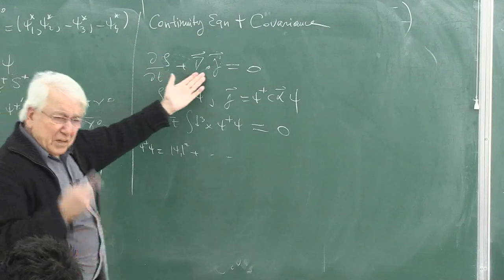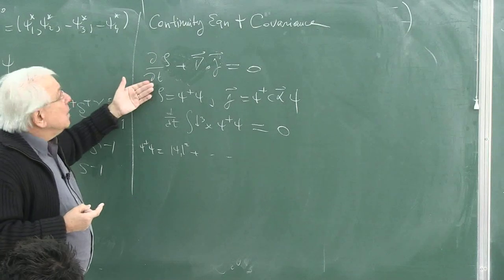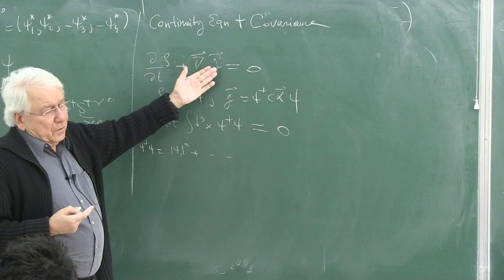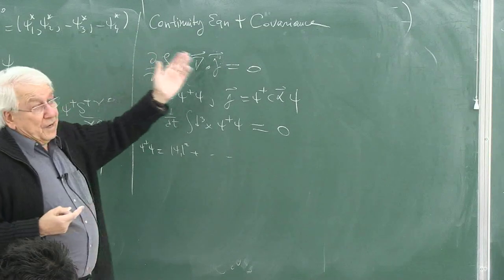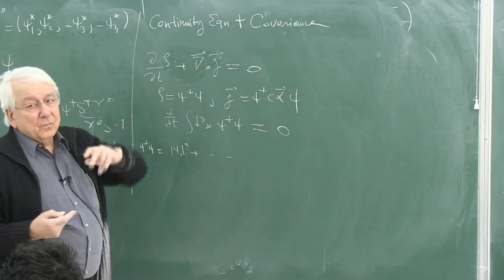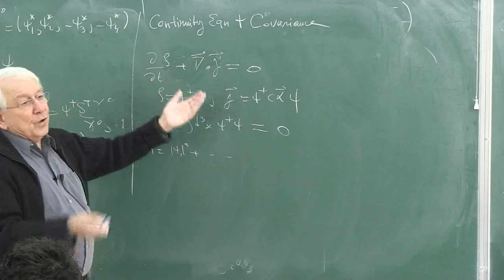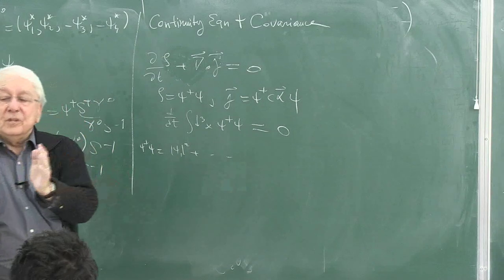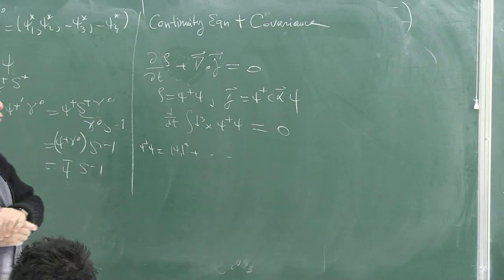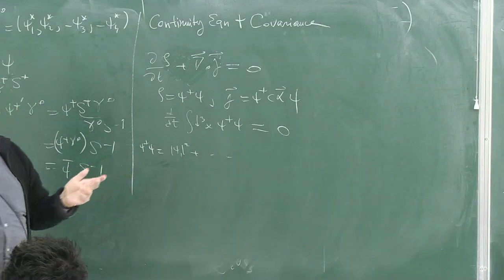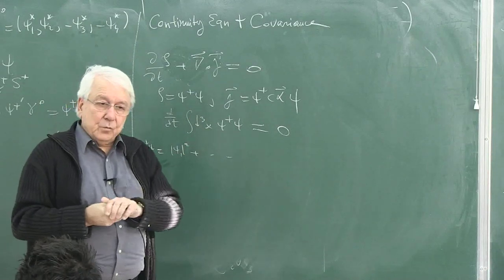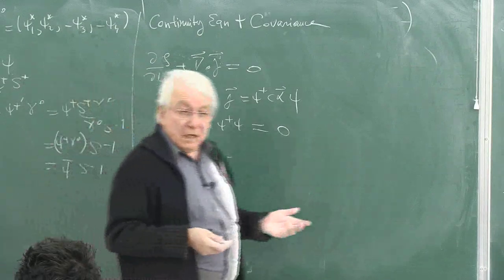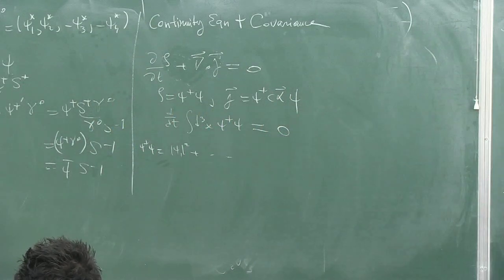A warning: when I look at exam papers, I see partial derivatives and straight derivatives mixed up — that is a serious mistake, not an innocent one. Please be careful. Now, rho equals psi-dagger psi, and psi is a spinor, so psi-dagger psi is not an ordinary scalar. The continuity equation has a time derivative and a space divergence, so if it is to have covariant meaning in all frames, rho must be the zeroth component of a four-vector and J the space part.